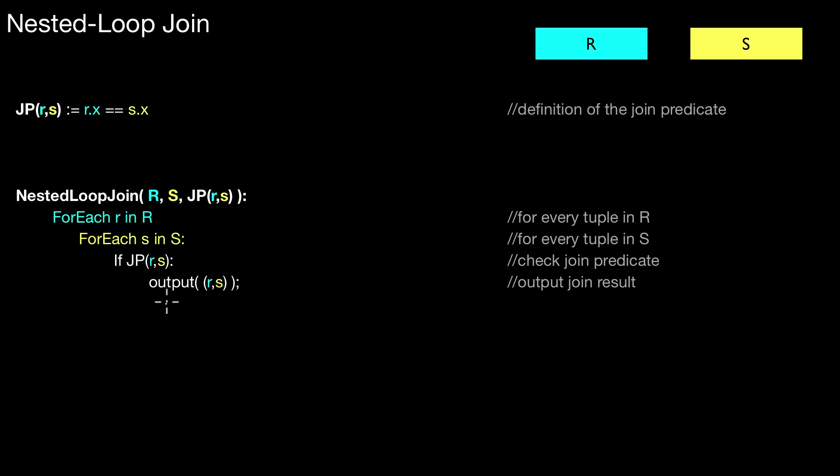So for the moment, let's fully ignore how this output is implemented. So here I just assume this is a function call. And somewhere there, the output tuples are collected. It doesn't matter for the moment.